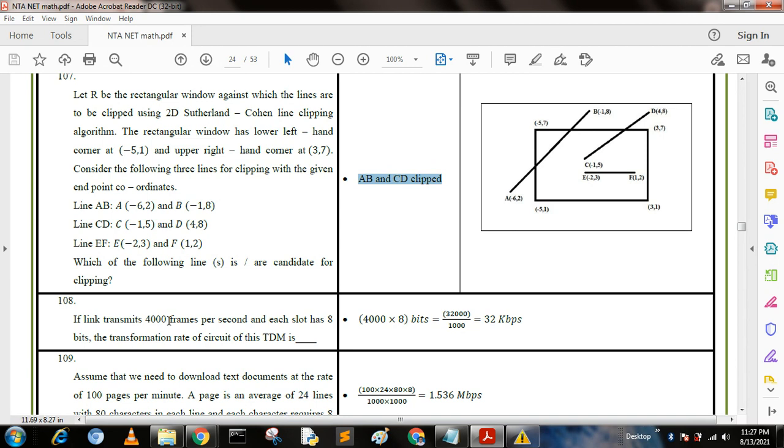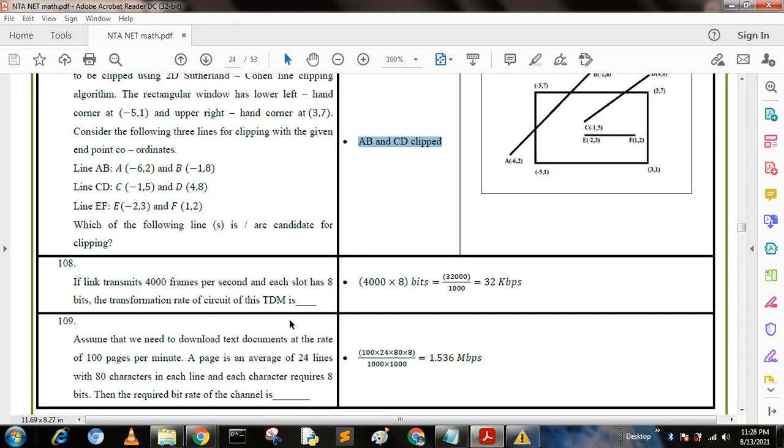Next question: If a link transmits 4000 frames per second and each slot has 8 bits, what is the transmission rate of the circuit of this TDM? We put this value: 4000 times 8 bits equals 32,000. Dividing by 1000 we get 32 kbps. When we transform bits to kilobytes, we divide by 1000, so the correct answer is 32 kbps.